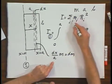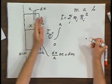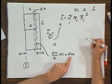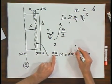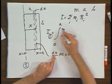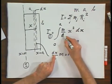So if I want an integral to take the whole sheet into account, I get dM, which is M over A times dx, but I also have to multiply by x squared. So I have M over A times x squared dx.